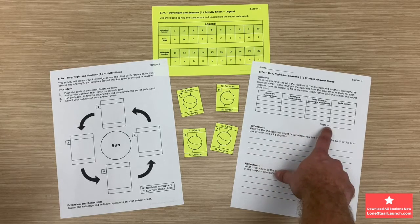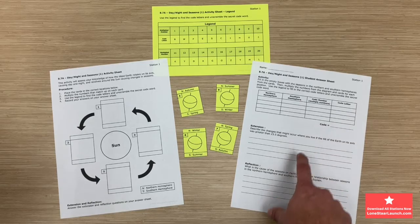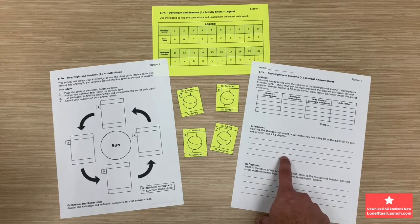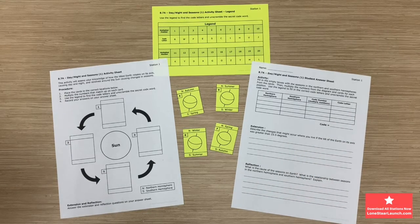On the extension portion students will be describing the changes that might occur where they live if the tilt of the earth on its axis was greater than 23.5 degrees.